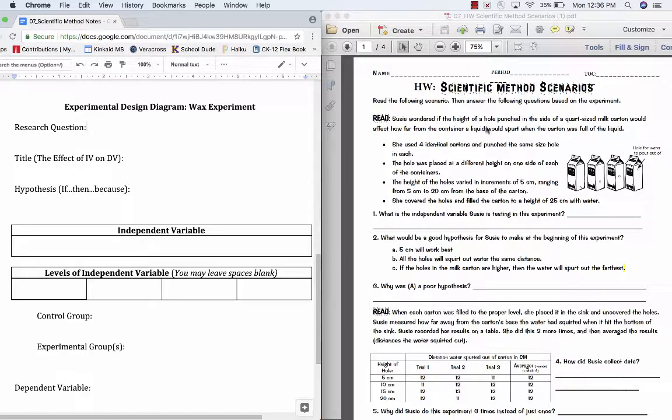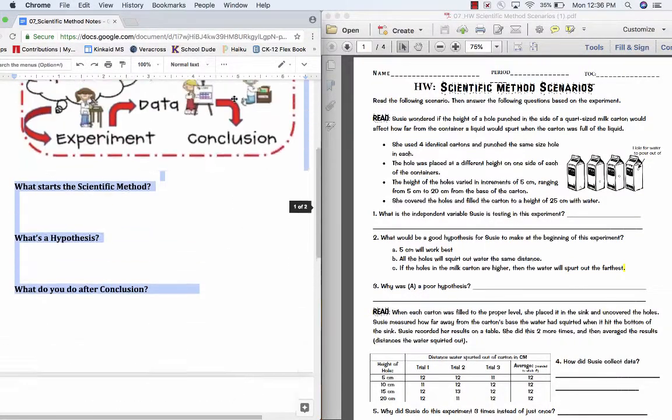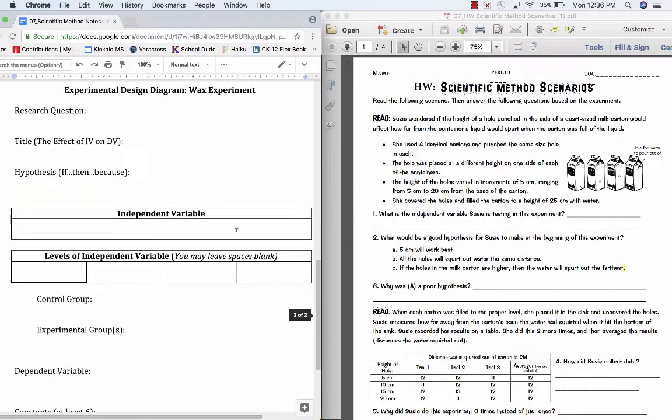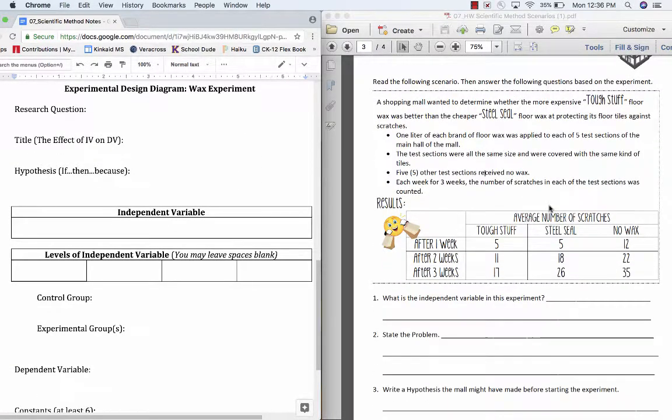Whenever we're reading scientific method scenarios, they are basically stories of how people approached an experiment. What we do is we take that information and stick it into an experimental design diagram, which I've highlighted on the left part of this screen. I'm going to take the third homework problem that I didn't make you guys do and use this as our story to fill in to our notes page.